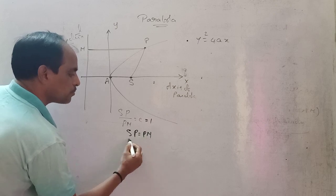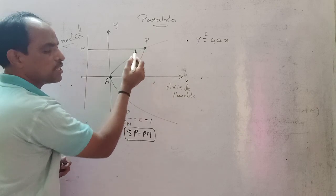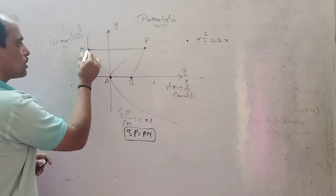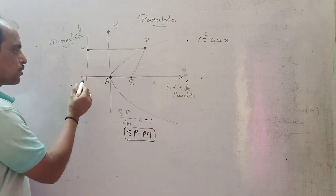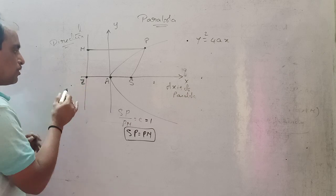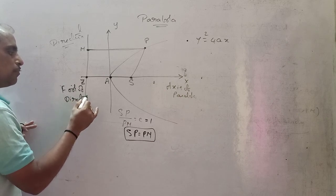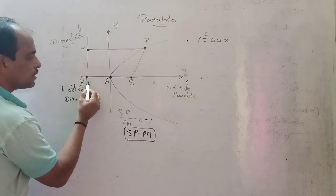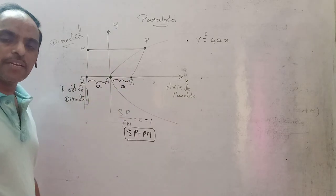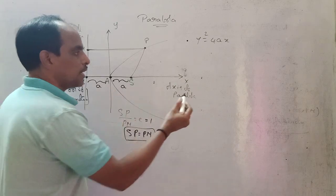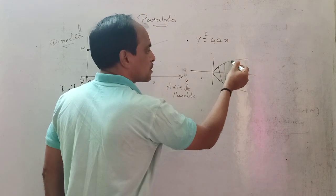So SP is equal to PM. This is called the vertex, this is the focus, P is the variable point, and PM is the perpendicular distance from the point to the directrix. The point Z is called the foot of the directrix. The distance from the vertex to the focus and from the vertex to the foot of the directrix are both equal to a.